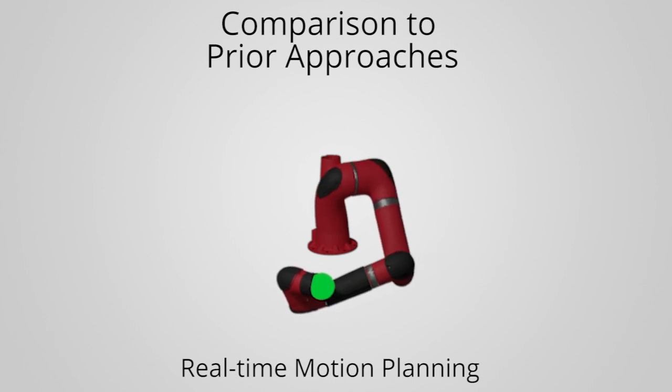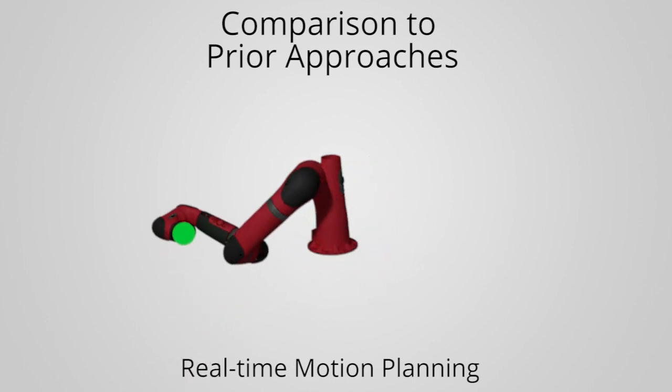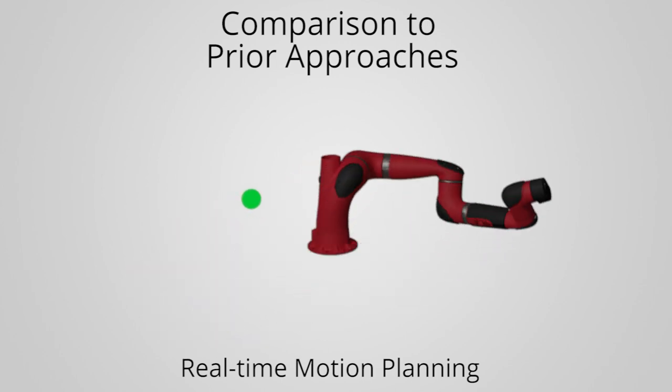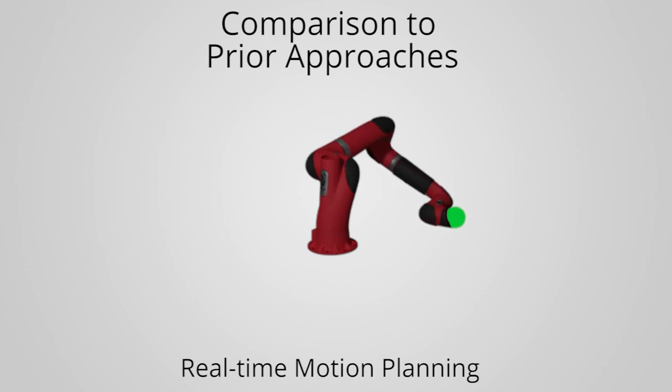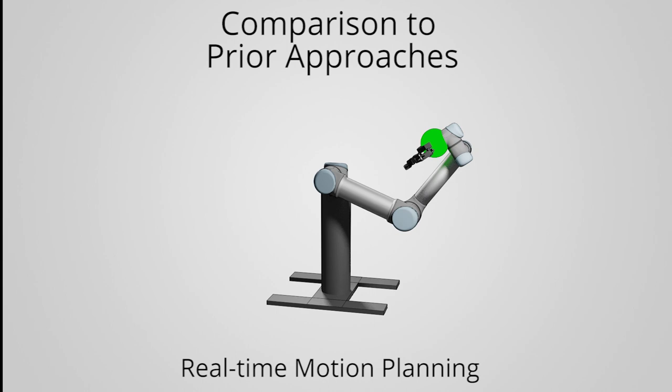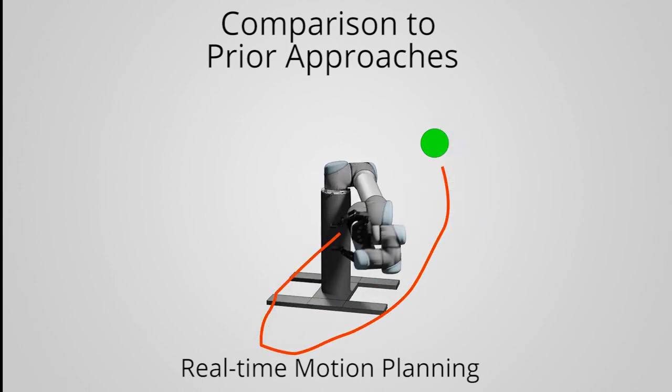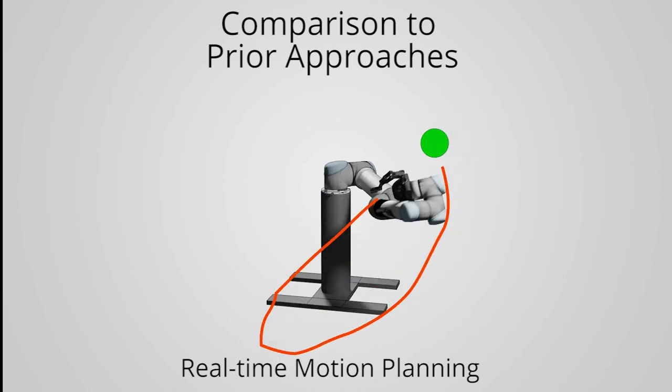Conversely, real-time motion planning approaches do provide feasibility guarantees. However, the resulting motion plans often forego end-effector pose precision in order to meet these feasibility constraints. In this example, this effect can be seen by the robot traversing a long, arced motion to move a small distance in end-effector space to avoid a self-collision.